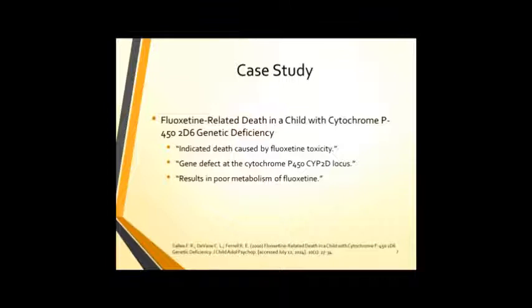I've highlighted a couple of points in this case study from the year 2000 that really hit home the last point. Fluoxetine overdoses. This case study details the death of a child with a cytochrome P450-2D6 genetic deficiency. Interesting points are that the indicated death was caused by fluoxetine toxicity, and it showed a defect at the cytochrome P450-CYP2D locus. This results in poor metabolism of fluoxetine. Over time, this child was prescribed with several drugs, the main one was fluoxetine. With this genetic deficiency, he had a buildup of fluoxetine, and after several months, he passed away from it. This study aims to help with remediation of issues like this and overdoses like this.